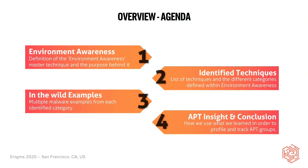In order to make this presentation a little bit more practical and easy to understand, we divided it into four different sections. The first one is going to be based on the Environment Awareness Master Technique, which is also the purpose behind this whole research. In the second section, I'm going to explain the five different categories within Environment Awareness and each of the techniques we were able to define. After each category, I'm going to show multiple malware family examples to show how they attempt to abuse such sub-techniques. Finally, I'm going to show how we were able to use what we learned in order to profile and track APT groups.